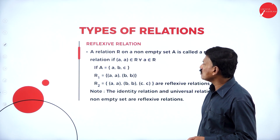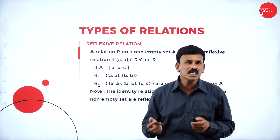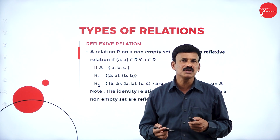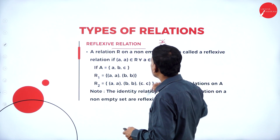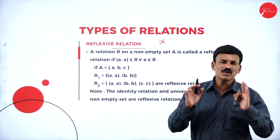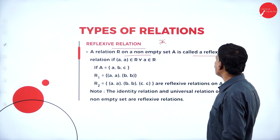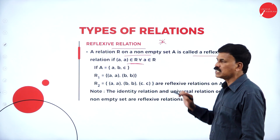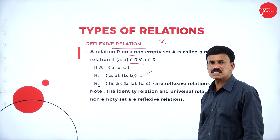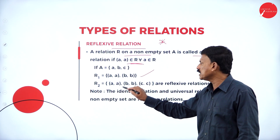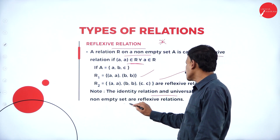The very important types of relations are reflexive relation, symmetric relation, and transitive relation. In the examination they may ask you to define these. Now let us know regarding reflexive relation. Reflexive means if (a, a) belongs to R — for example, (1,1) belongs to R, (2,2) belongs to R. A relation R on a non-empty set A is called reflexive if (a, a) belongs to R for all a belonging to A.